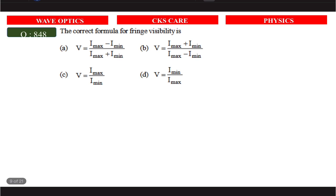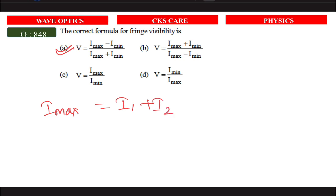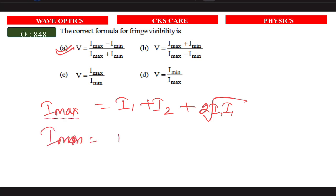The correct formula for fringe visibility: the maximum intensity is I_max = I1 + I2 + 2√(I1·I2), and the minimum intensity is I_min = I1 + I2 − 2√(I1·I2).